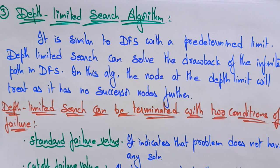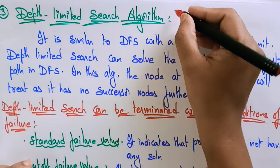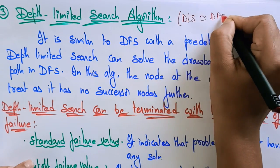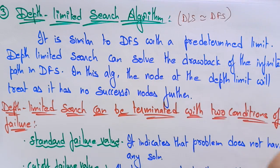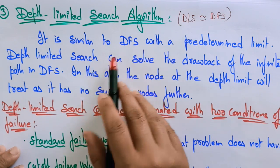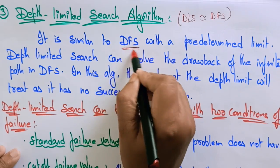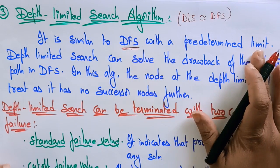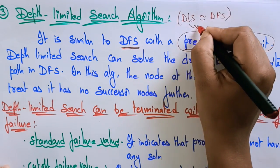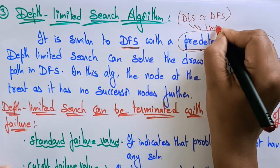Let's continue with the uninformed search algorithms. The next type is the Depth Limited Search algorithm, or DLS. DLS is similar to DFS with only one difference: it is similar to the depth first search but with a predetermined limit. We are using one concept here — a limit — that's why we call it the depth limited search algorithm.